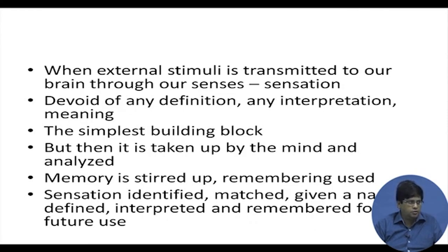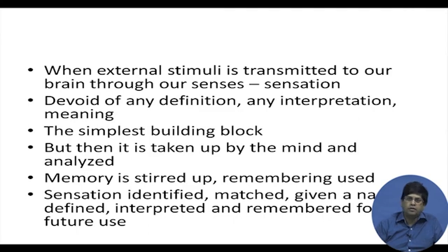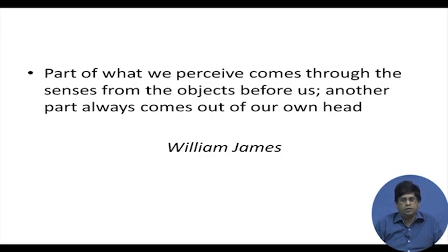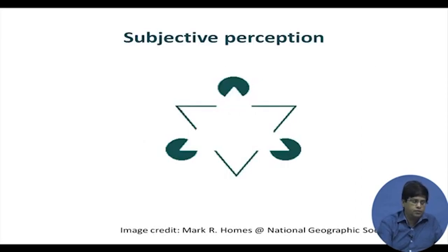Stimuli are transmitted to our brain as sensations — at that point they are devoid of any meaning or interpretation, these are the simplest building blocks. But then the mind analyzes them with the help of memory and other stored things, gives them a name, a definition, interprets them, remembers them for future use, and then we have what is known as perception. Interestingly, philosopher-psychologist William James tells us that part of what we perceive comes from outside, but the major part of it comes from within the mind — and that is why illusions make sense.